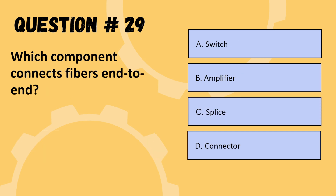Next question: which component connects fiber end to end? Options are switch, amplifier, splice, or connector. The correct option is D: connector.